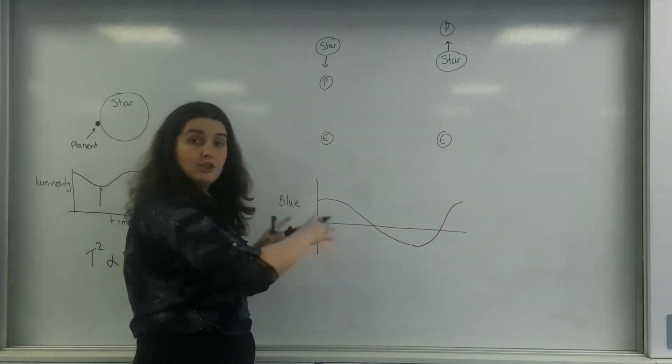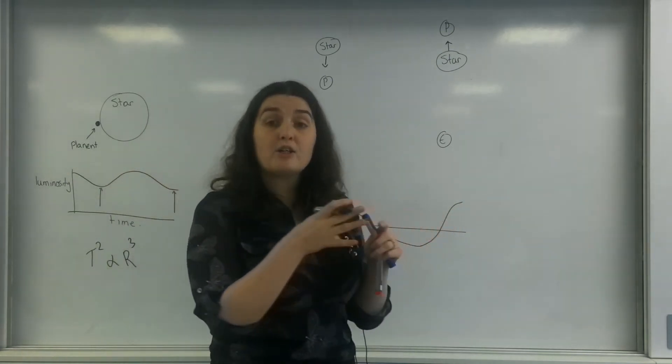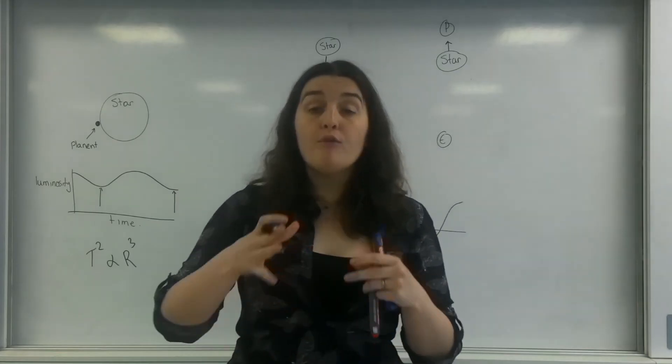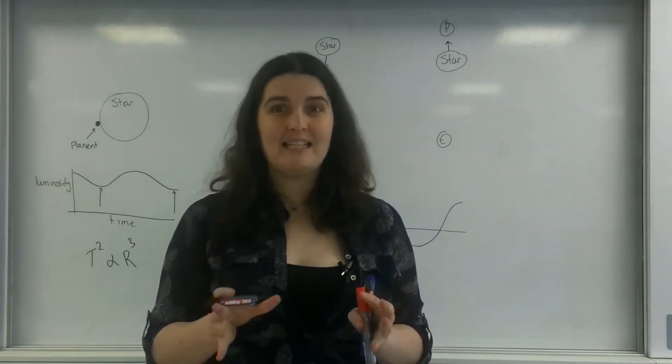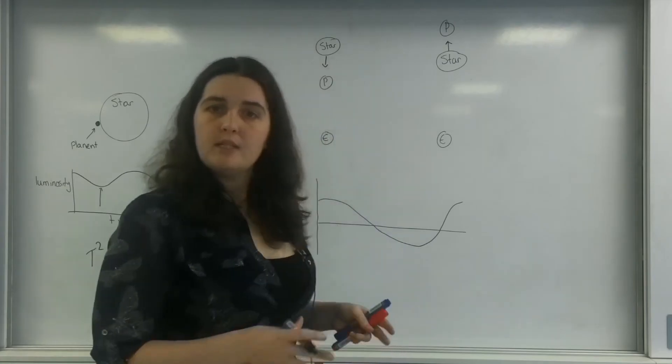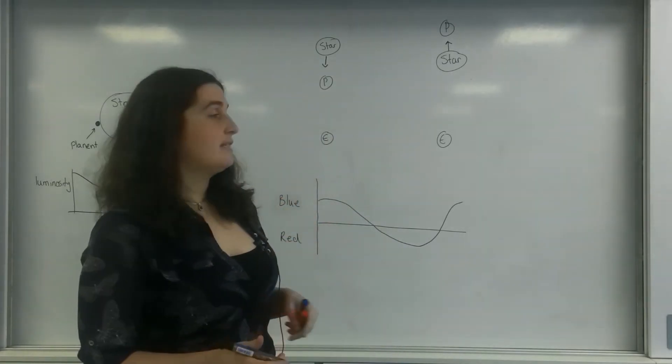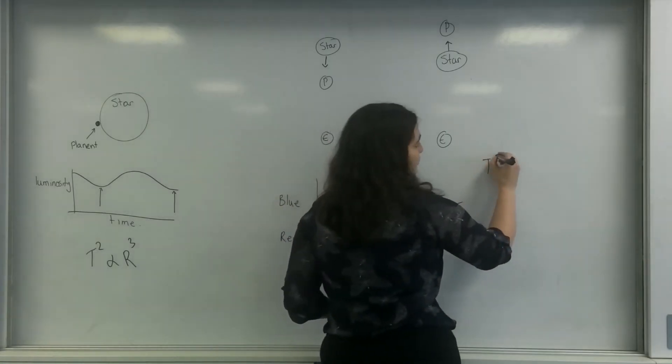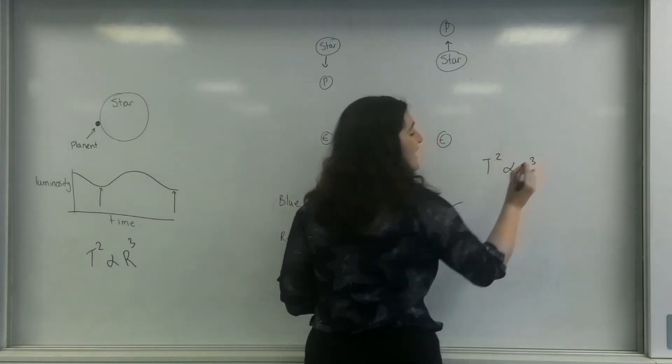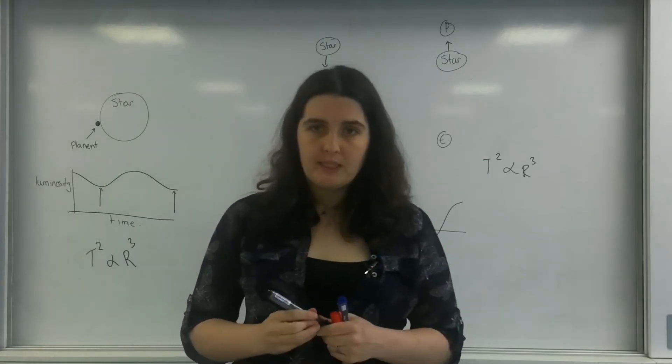And of course from this, you can work out the actual time period of the orbit of the planet itself. So using red and blue shift, we're actually able to find these exoplanets. And then using Kepler's law of planetary motion, we can actually work out the radius that planet is orbiting.